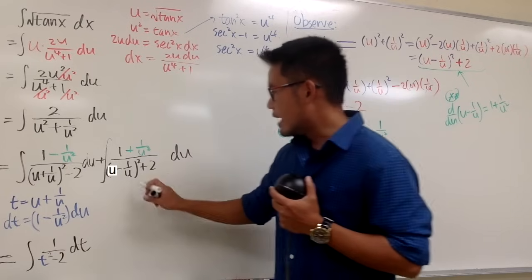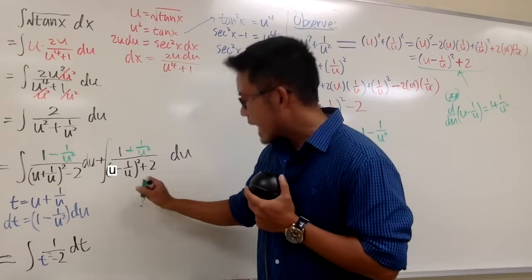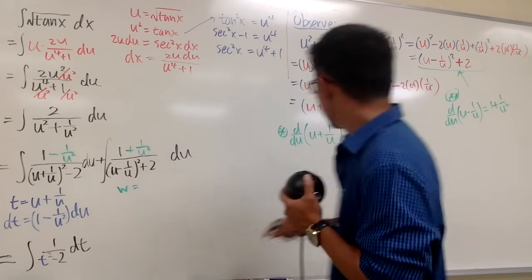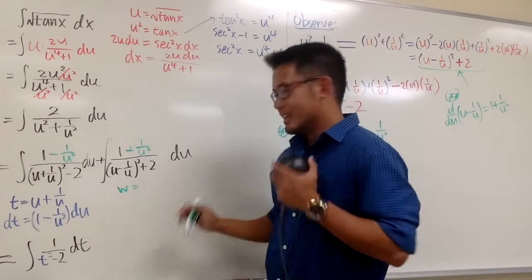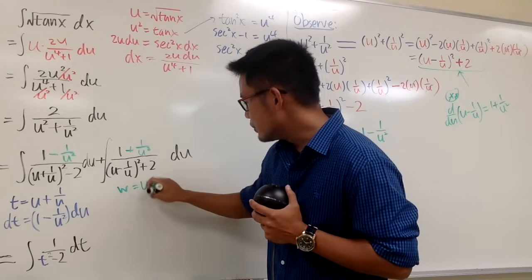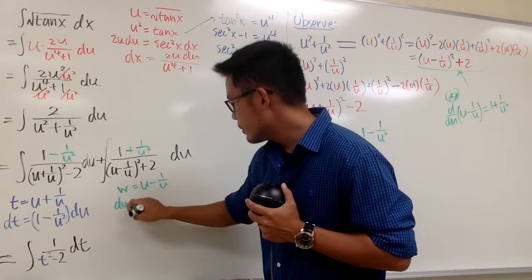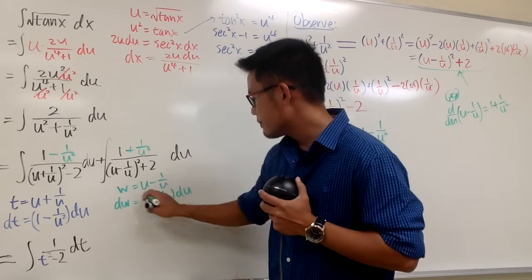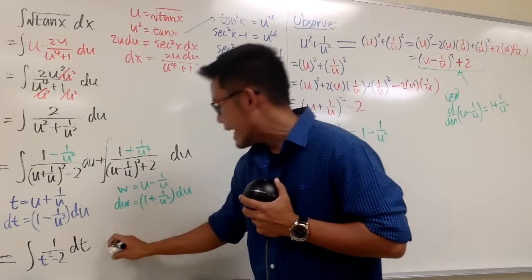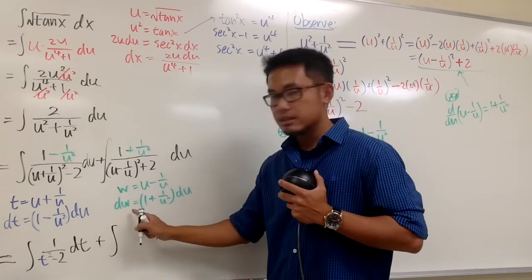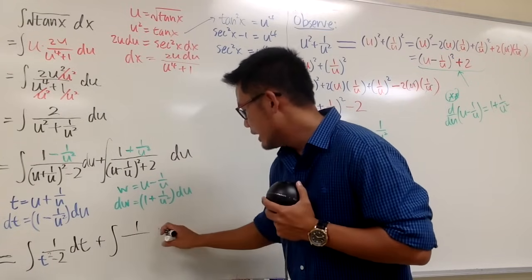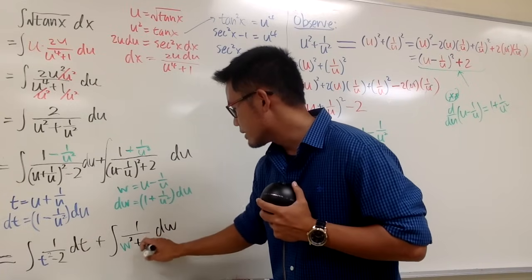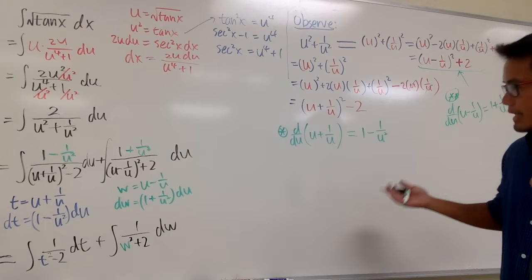For the second integral, I'll use a w-substitution. Let w equal u minus 1 over u. Then dw equals 1 plus 1 over u squared, du. This matches the numerator of the second integral. So it becomes the integral of dw over w squared plus 2.